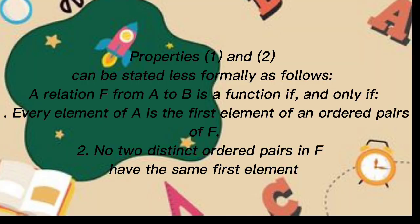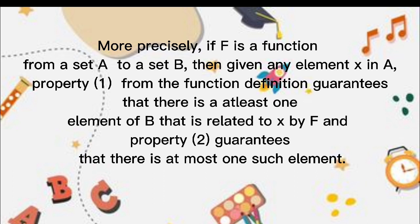Properties 1 and 2 can be stated less formally as follows. A relation F from A to B is a function if and only if: Number 1, every element of A is the first element of an ordered pair of F; Number 2, no two distinct ordered pairs in F have the same first element. More precisely, if F is a function from a set A to a set B, then given any element X in A, property 1 guarantees that there is at least one element of B that is related to X by F, and property 2 guarantees that there is at most one such element, making it possible to give the element that corresponds to X a unique name.